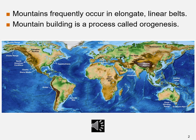Mountain building is a process called orogenesis. Orogeny is the primary mechanism by which mountains are built on continents. Mountains frequently occur in elongate linear belts. A digital map shows the topography of the world and locations of mountain ranges.